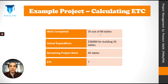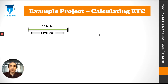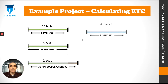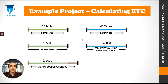Let's go back to our example project. At the end of day 3, 35 out of 80 tables were built, and the cost of building these tables was $36,000. 45 tables were still to be built, and we have to estimate the cost of these remaining tables. At the end of day 3, the earned value was $35,000, but it actually cost $36,000 — a small variation. We should have spent $35,000 to build 35 tables as per our original estimates, but we actually spent $36,000.